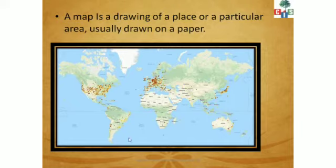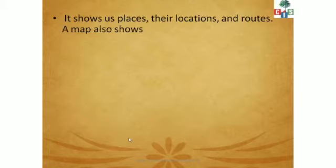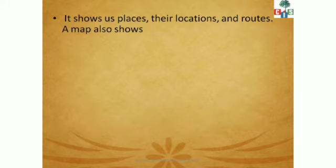We can see that a map shows us places, their locations, and routes. It shows places — locations means which place is where. Routes means the directions — how to go somewhere and from where to go. So all of this we can see through the map.